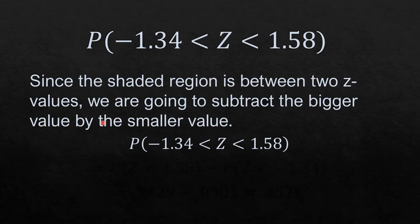Since the shaded region is between two Z values, we are going to subtract the bigger value by the smaller value.